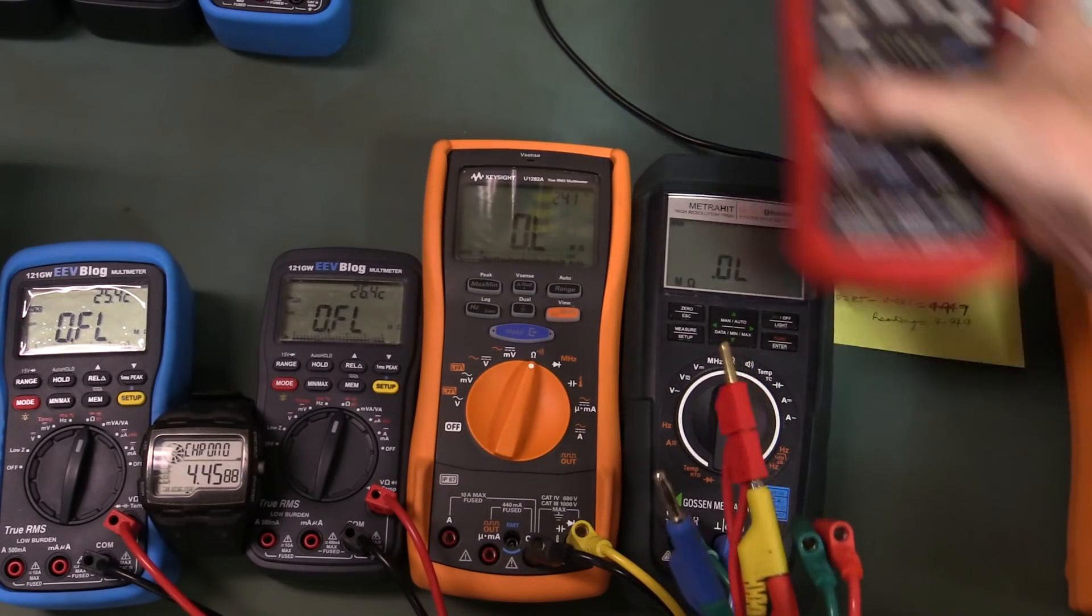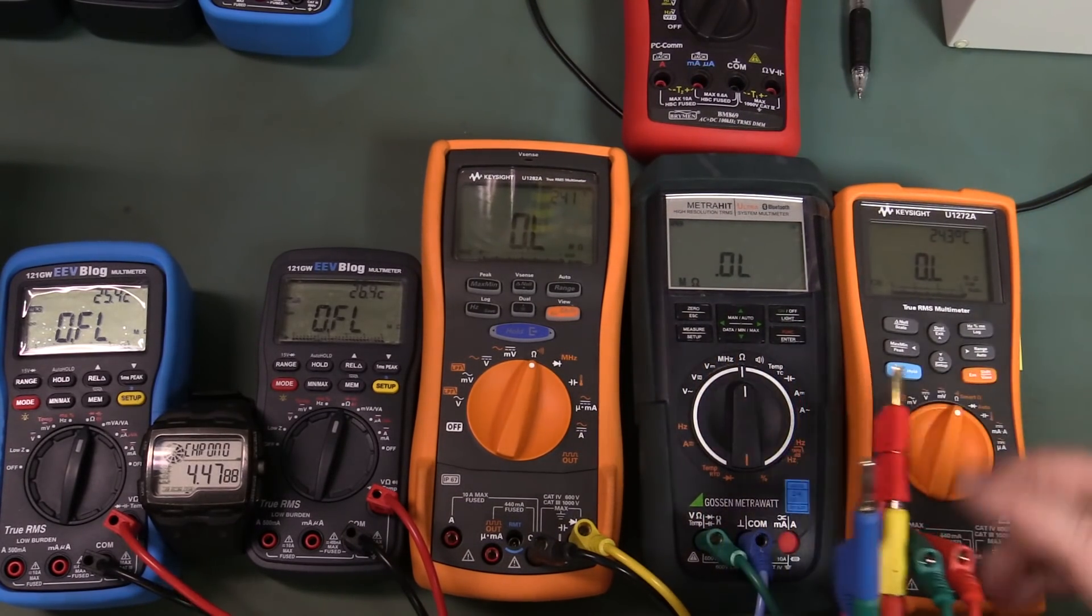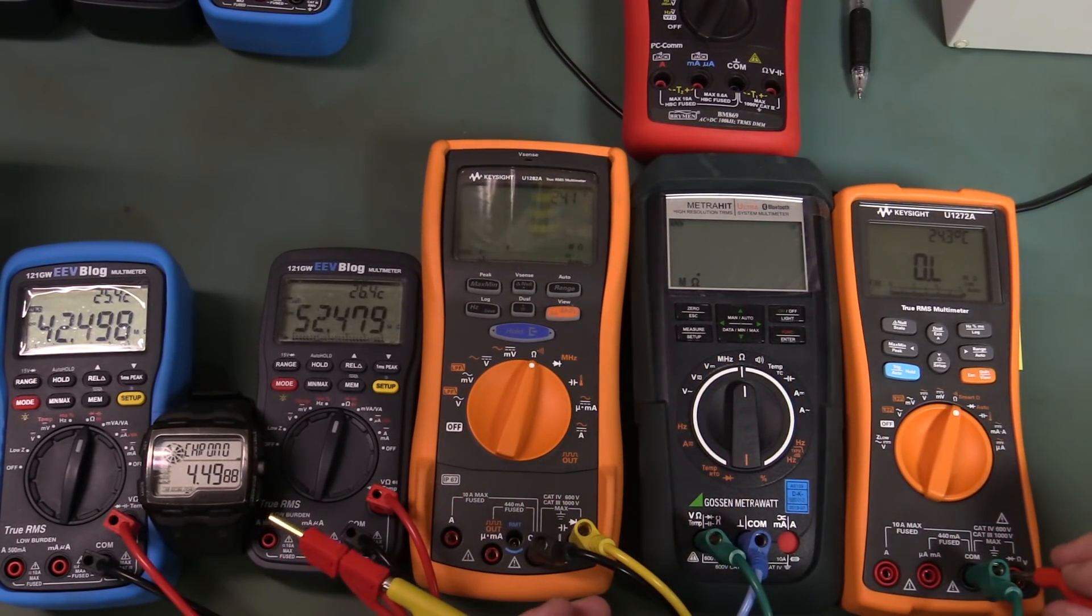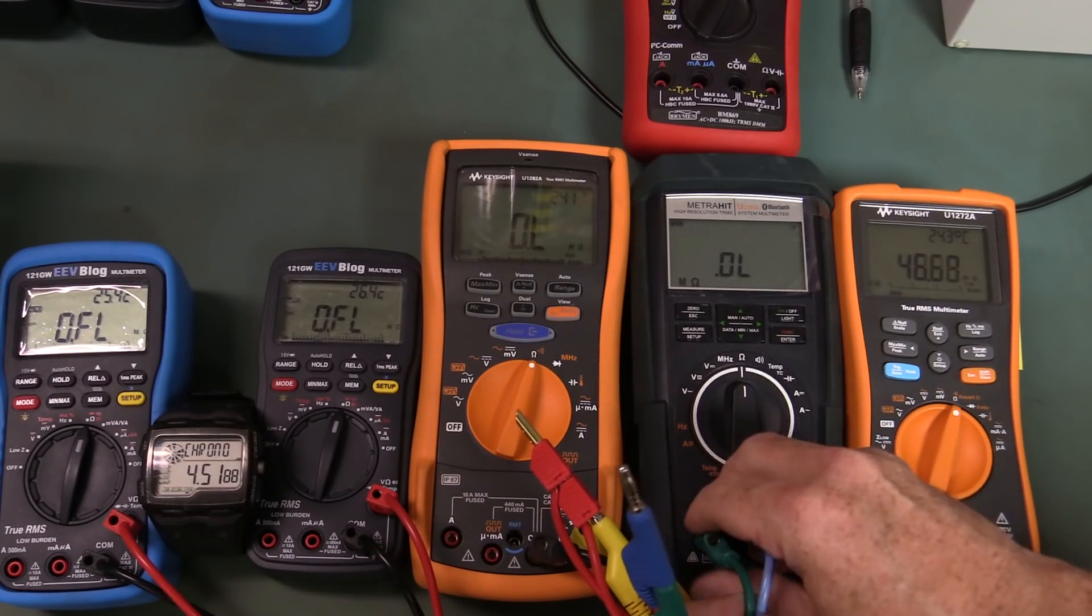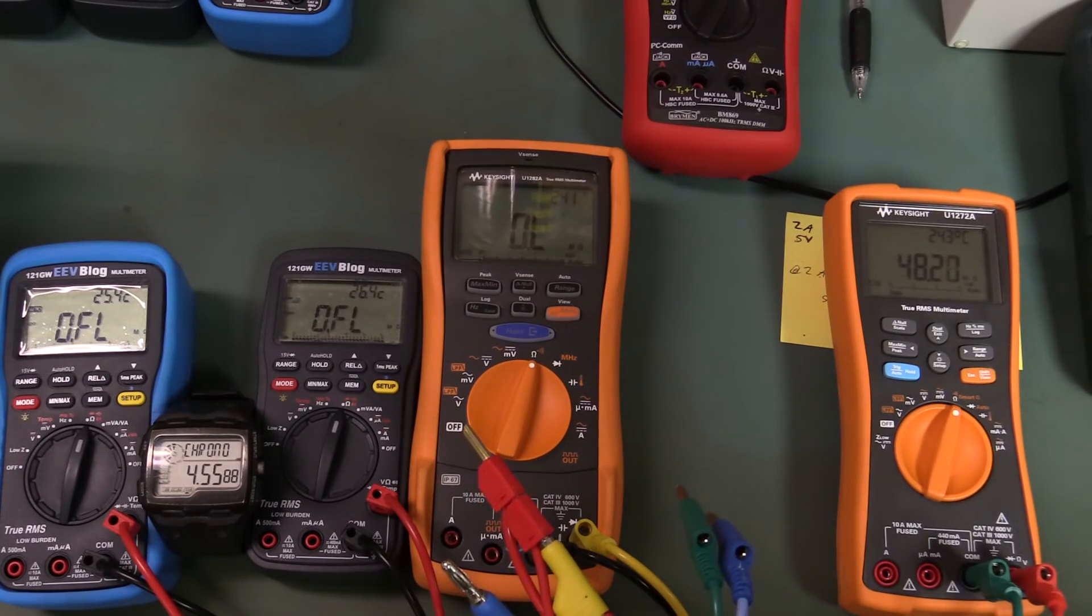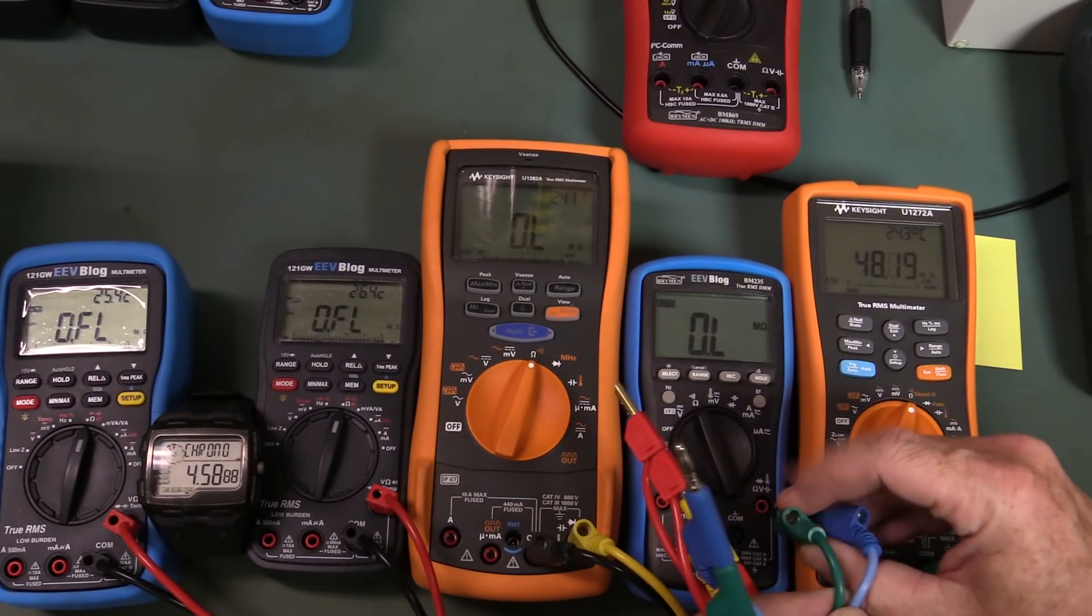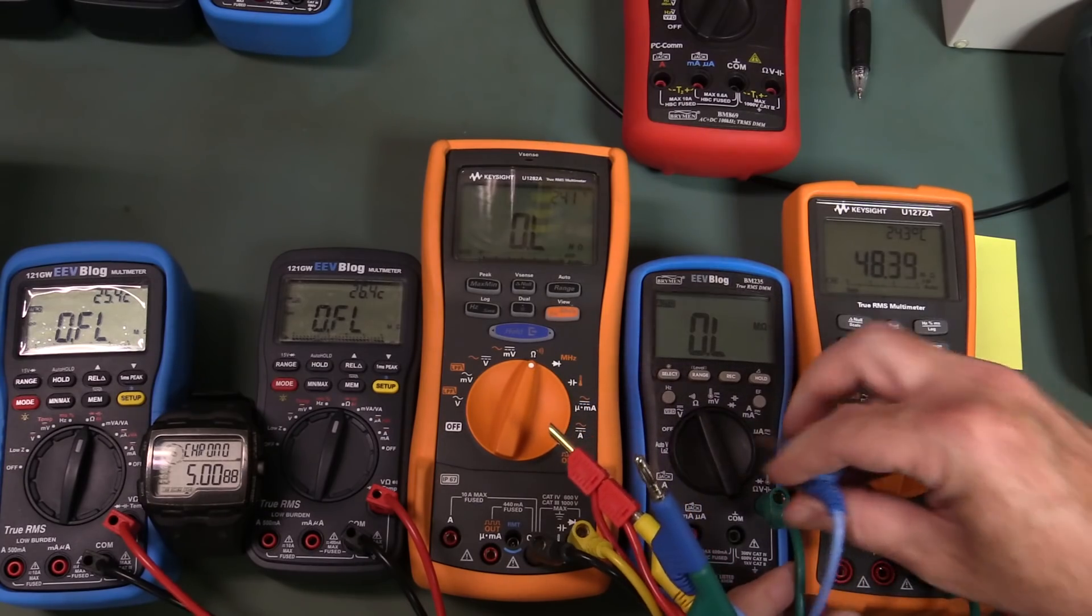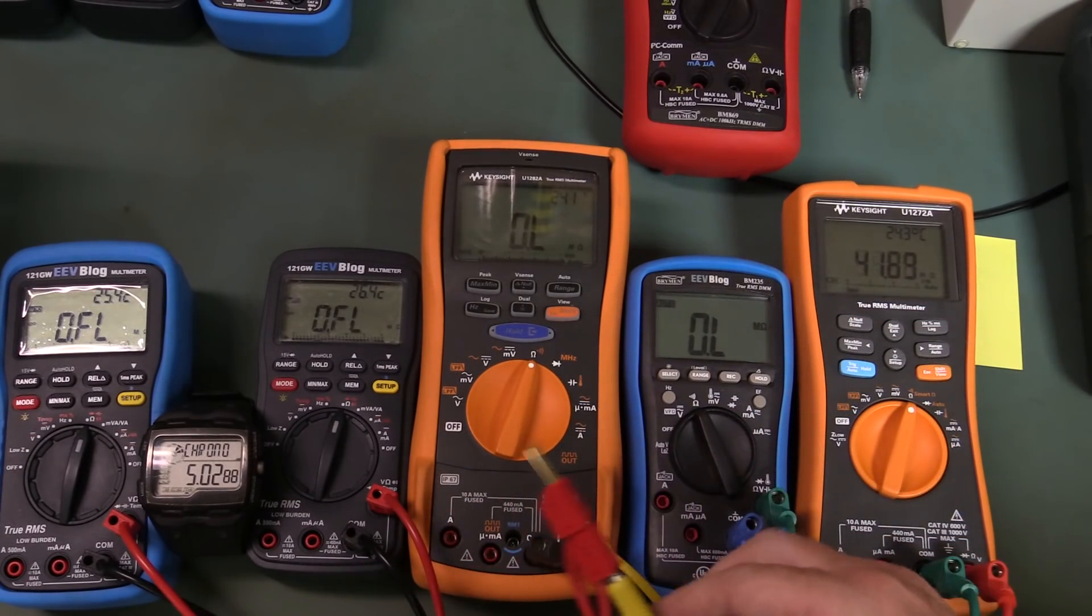For those who are interested, let's put in a 1272A for example. Let's get rid of the Gossen, and let's put in, say, the BM235, which is I think that goes in positive there. And that is really quick.